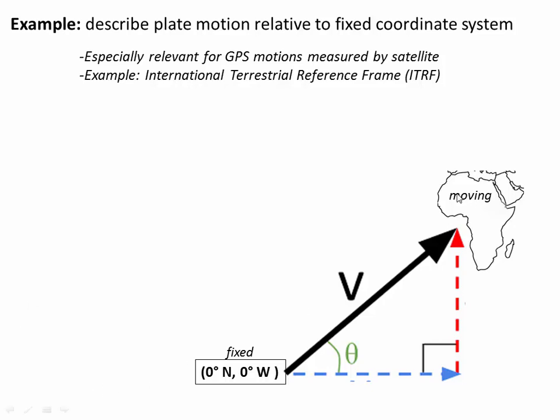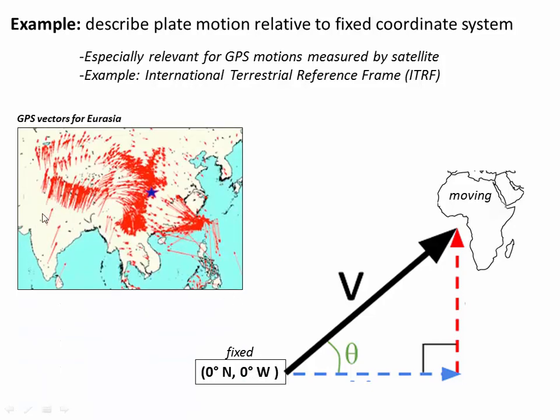So in this example, if we had a GPS station on Africa, we could describe how it was moving relative to a fixed latitude-longitude grid, for example relative to the fixed coordinates of 0° N, 0° W that do not change and aren't moving. And here's an example of some GPS velocity vectors showing how India is moving northward relative to Eurasia. I should say relative to a fixed reference frame.